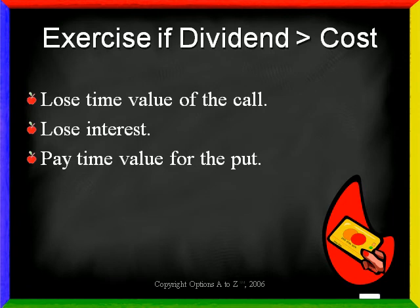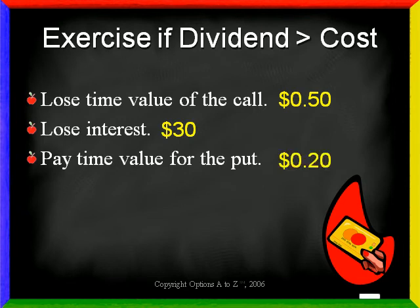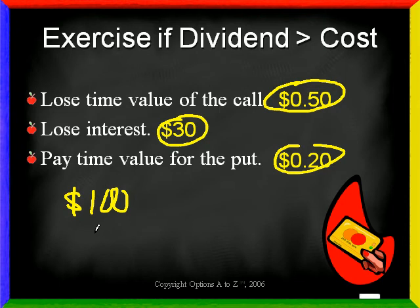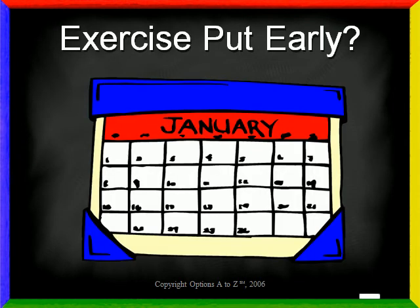For example, if you exercise a call that has 50 cents worth of time value, and you will lose, let's say, $30 worth of interest by paying for the stock early, and you'd have to pay 20 cents for the put, then that has a total value of 50 plus 30 plus 20 equals $100. If the dividend is less than $100, it does not pay to exercise the call early. If the dividend is greater than $100, it may pay to exercise early, keeping in mind that you'd have to account for commissions and possible exercise fees.